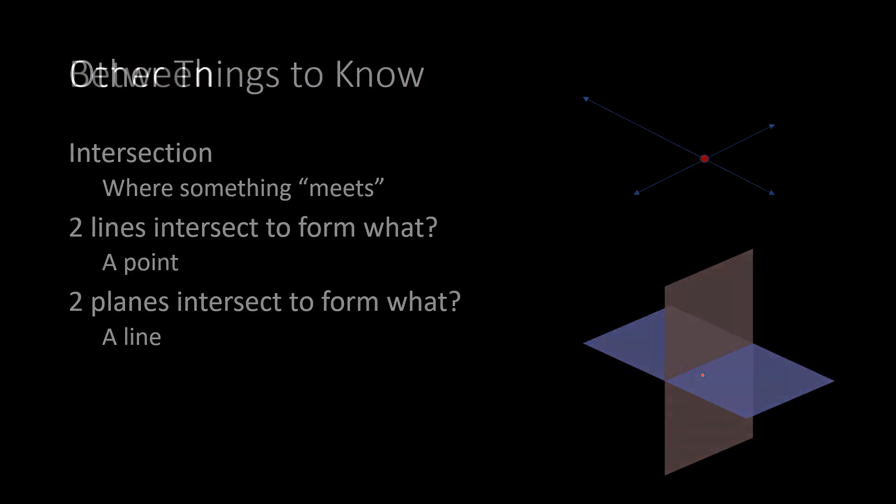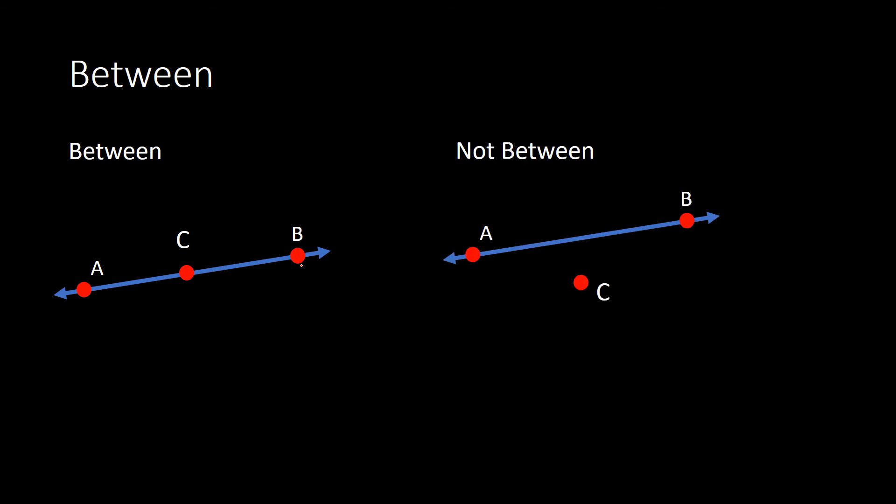One last thing, and that's the idea of the word between. For example, you have A and B, and then C — C is between A and B. What sometimes people are confused about is when C appears to be between A and B but is not on the same line. To be between, the points technically need to be on the same line. So make sure you understand the difference between the concept of between and not between. And that concludes our lesson for today — we will see you next time.